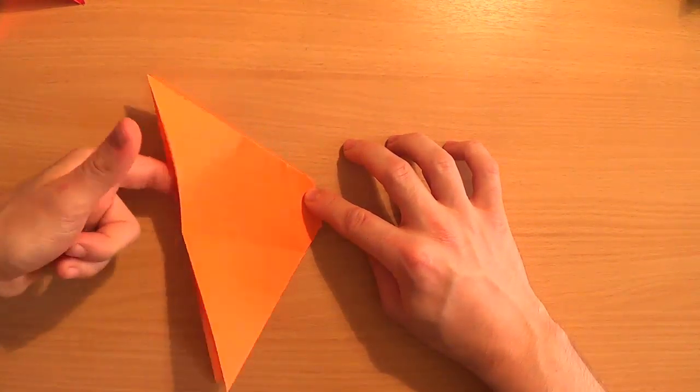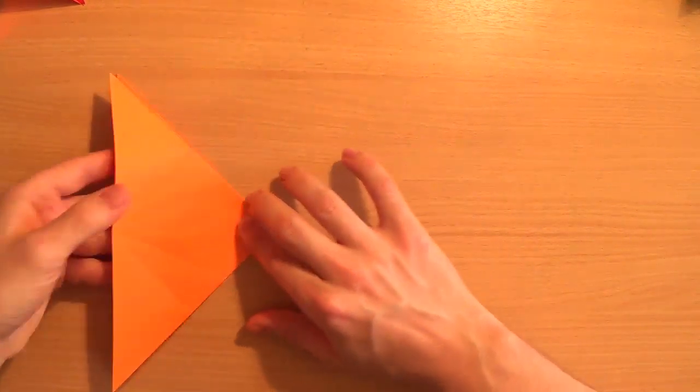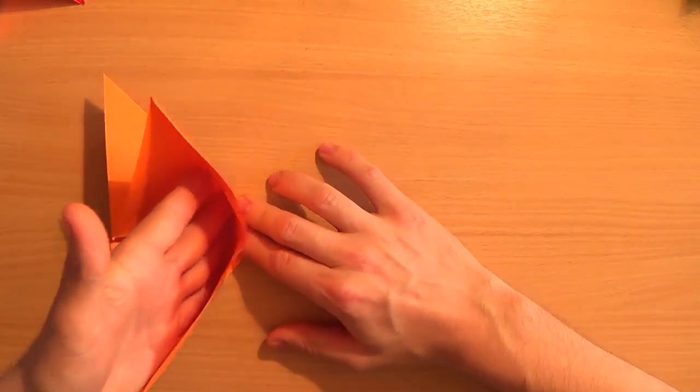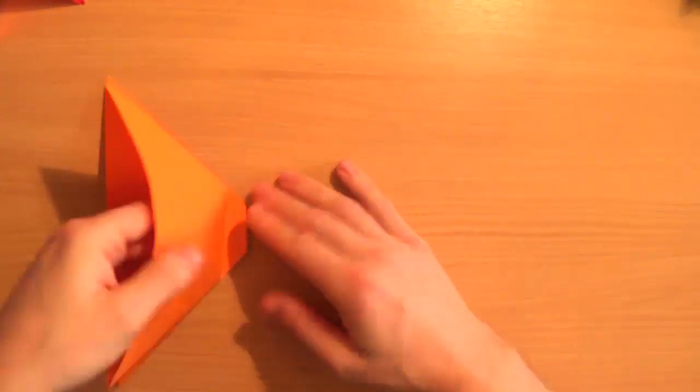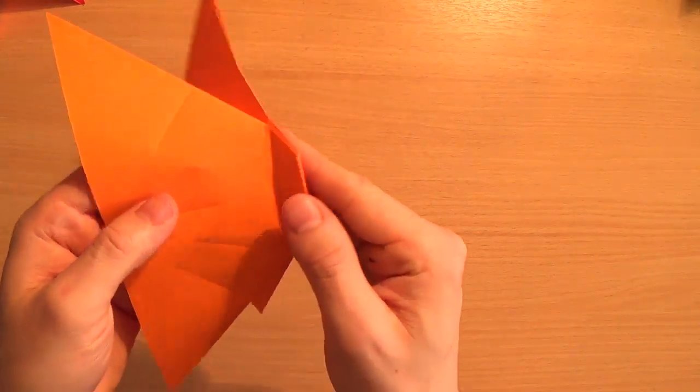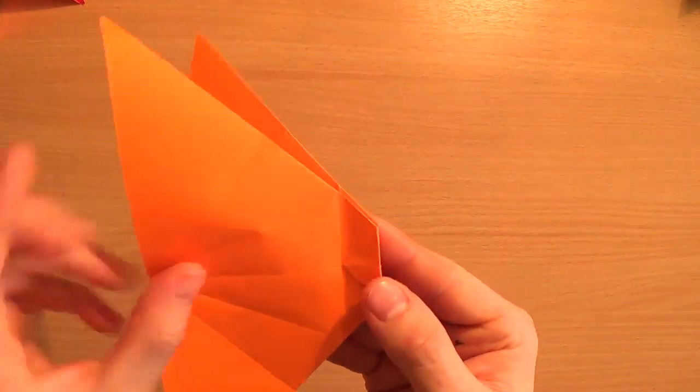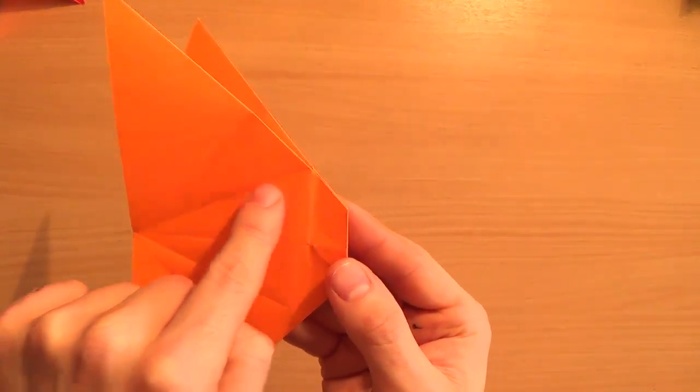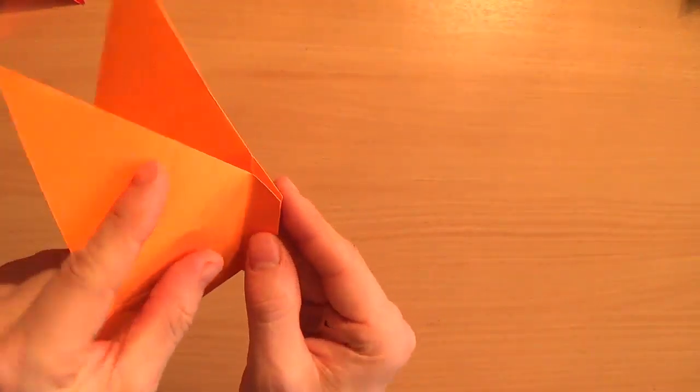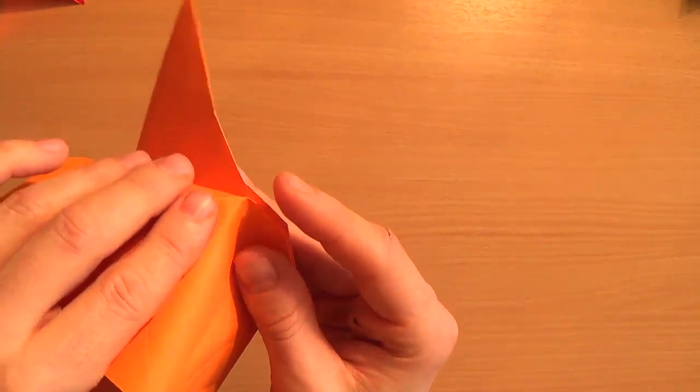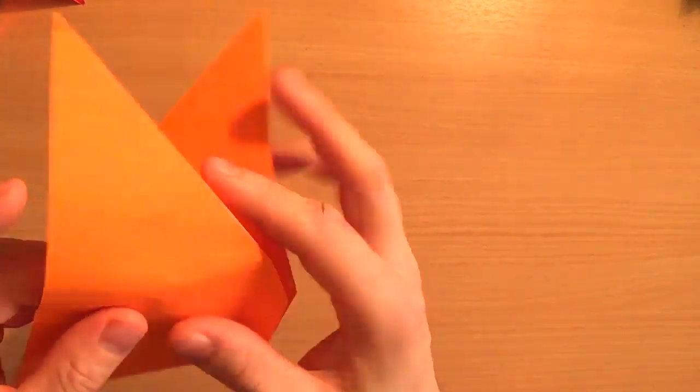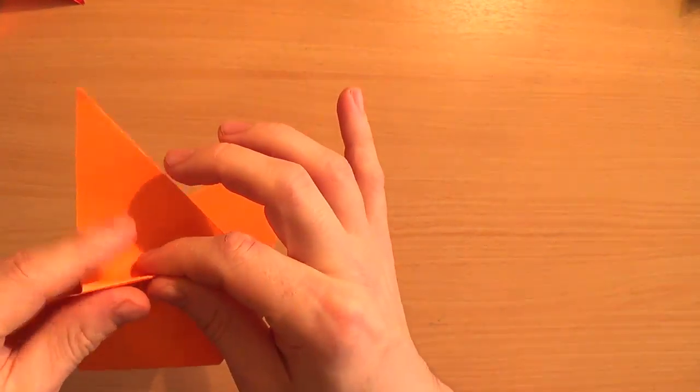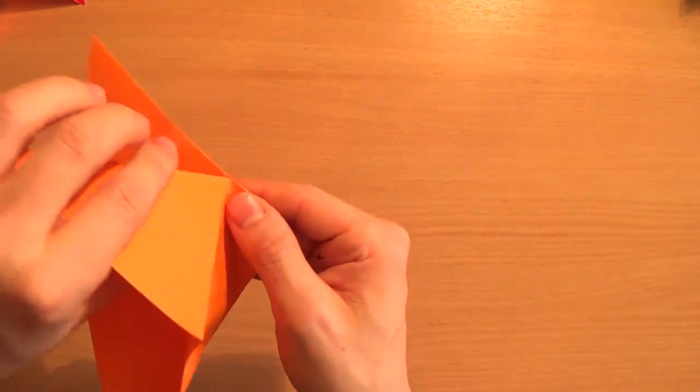So we're going to take our top section, and we're going to turn that into a valley fold there. And what we did previously is we put two sets of creases in. And this crease here is going to become a mountain fold. So we turn that into a mountain fold. Like that.